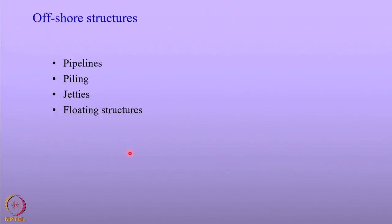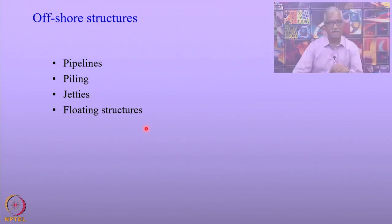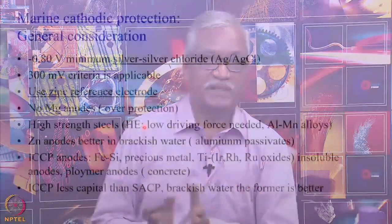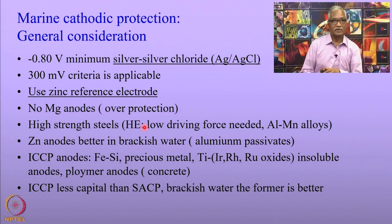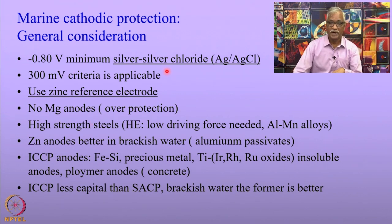Let us look at the offshore structures. The offshore structures discussed today are pipelines, pilings, jetties, and floating structures. For marine cathodic protection, the general criterion is minus 0.8 volts with respect to the silver-silver chloride electrode.